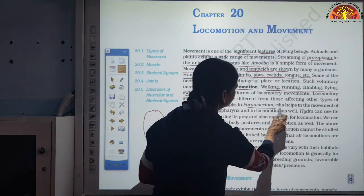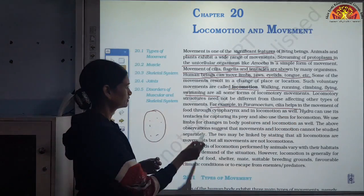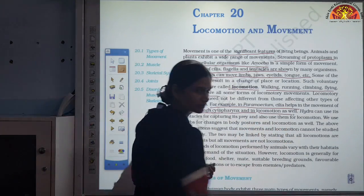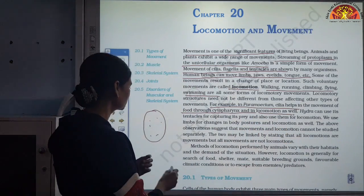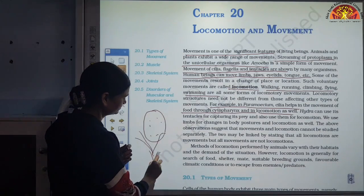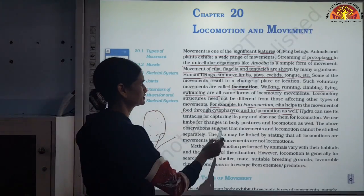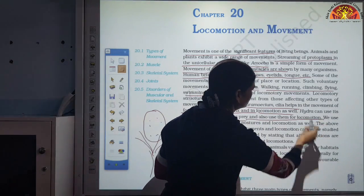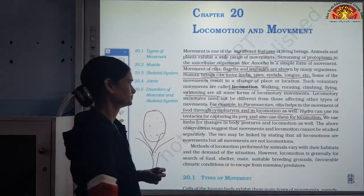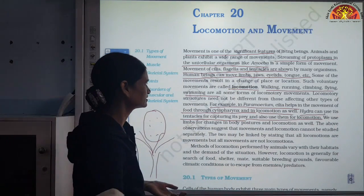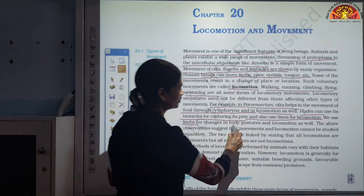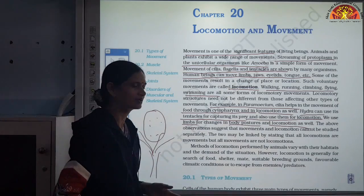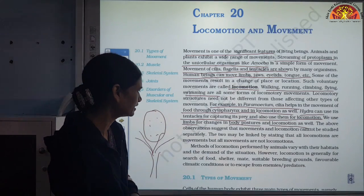For example, in Paramecium, cilia helps in the movement of food through the cytopharynx, and it also helps in locomotion. In Hydra, the tentacles are moved for capturing prey and are also used for locomotion. Similarly, we move our hands and legs — limbs — for changing body postures, and they are also used for locomotion. So all these are examples of locomotion and movement.